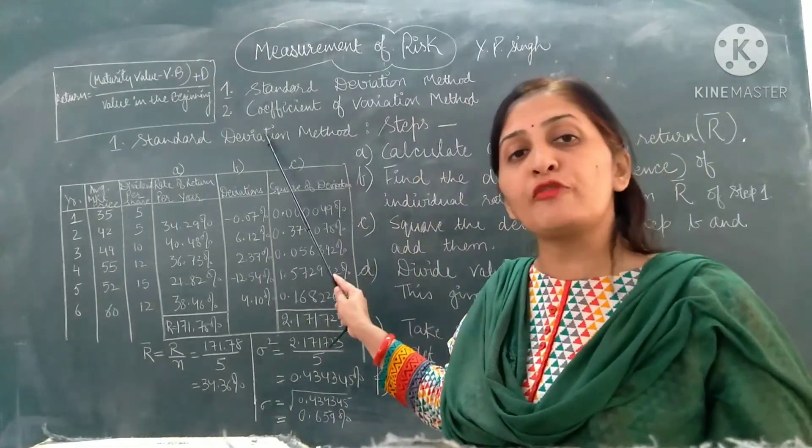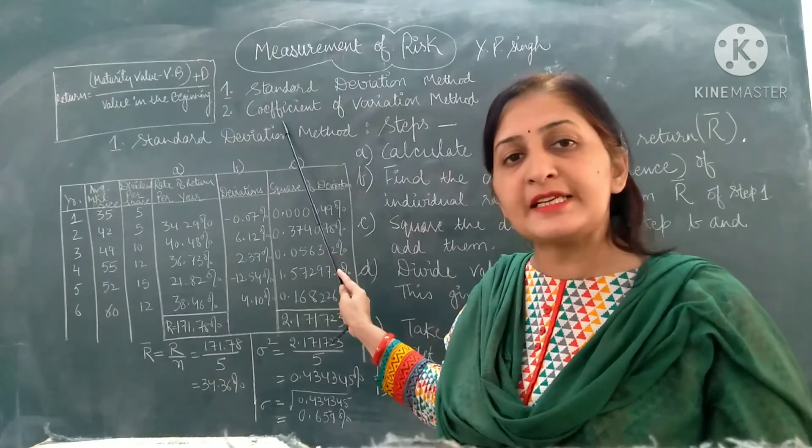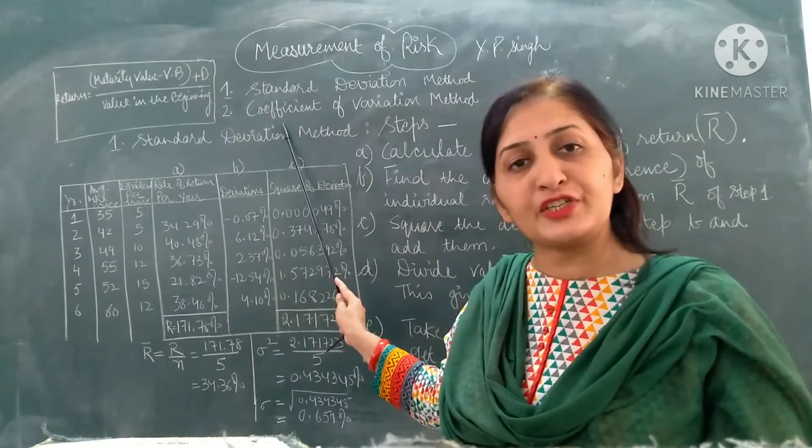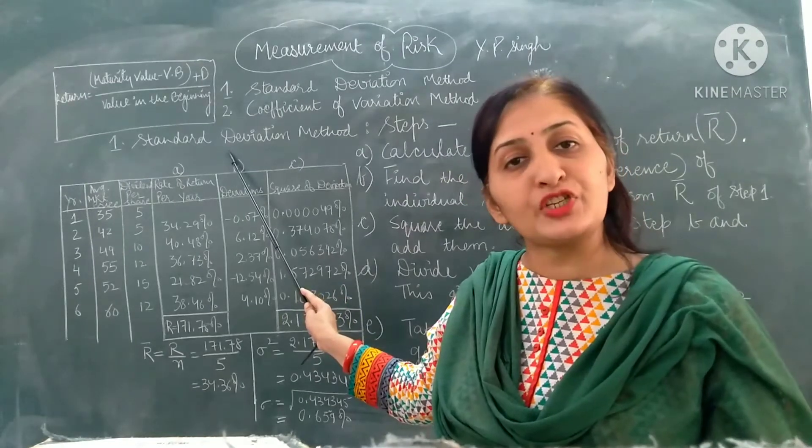There are basically two methods of measurement of risk. First one is standard deviation method and second one is coefficient of variation method. In our present video, we will discuss this standard deviation method.